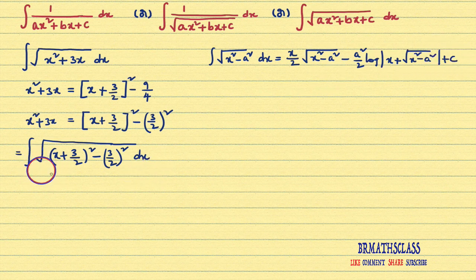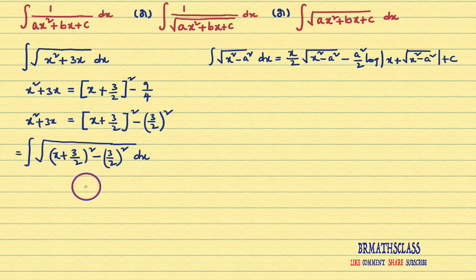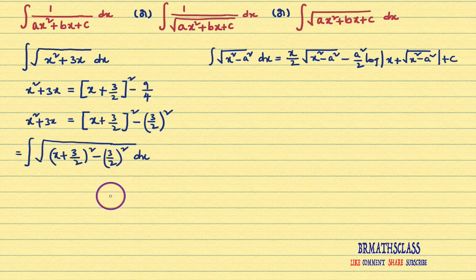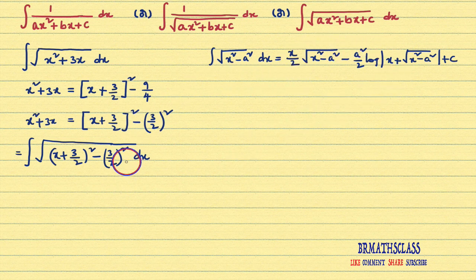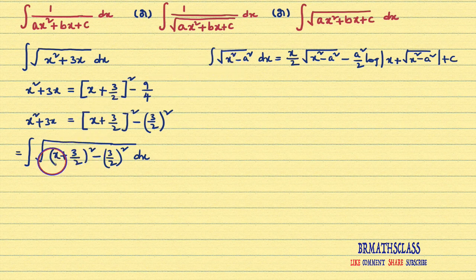Actually we need to integrate this by substitution method, but if I use integration by substitution method here it creates unnecessary confusion. The point is, we can write its answer directly by observing this formula. Here x² is there; here (x + 3/2)² is there — that means in place of x, x + 3/2 is there.